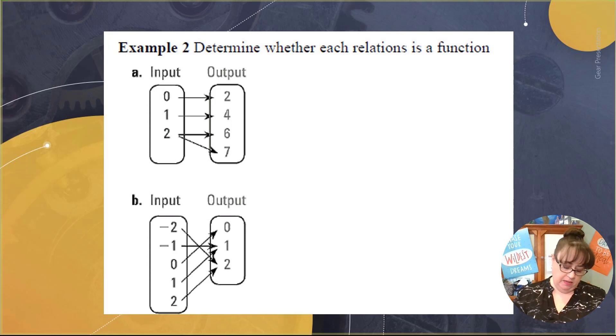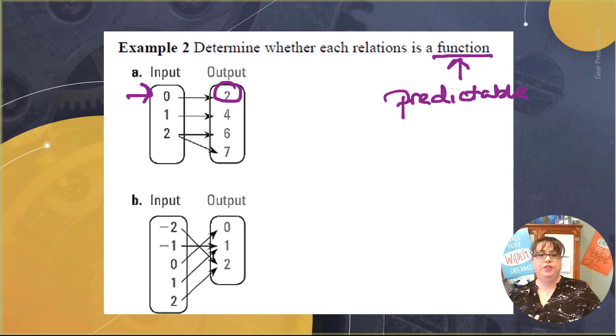So if I'm standing on the outside of the Coke machine and I press this button, I predict and I will know that every single time I will get a 2 out. It is predictable. This is good. This is what a function does. A function is predictable. I know what's going to happen. So when I press the 1, I know every time I press the 1, I am going to get a 4 out.